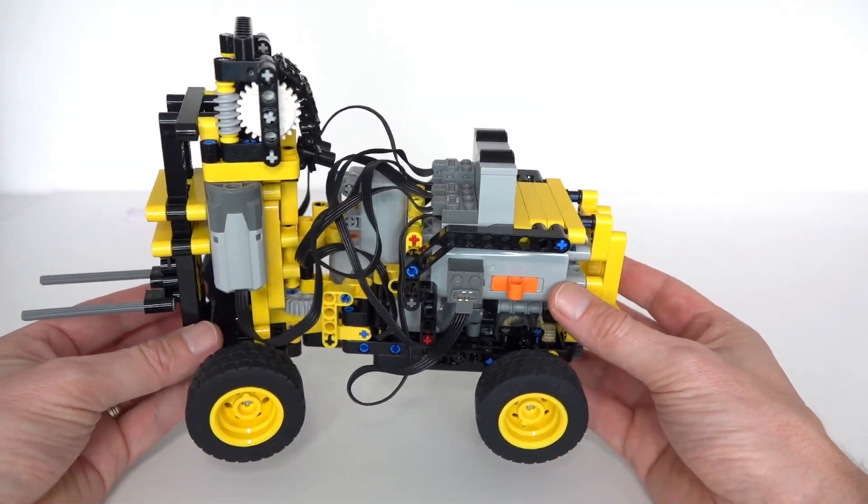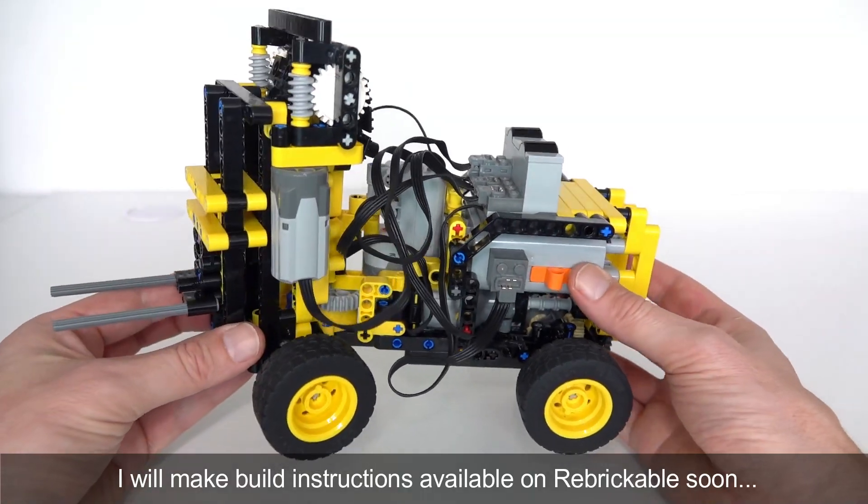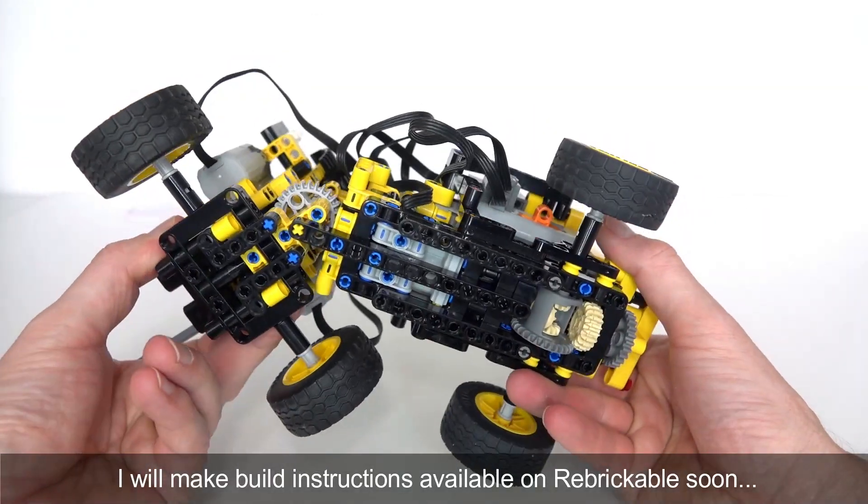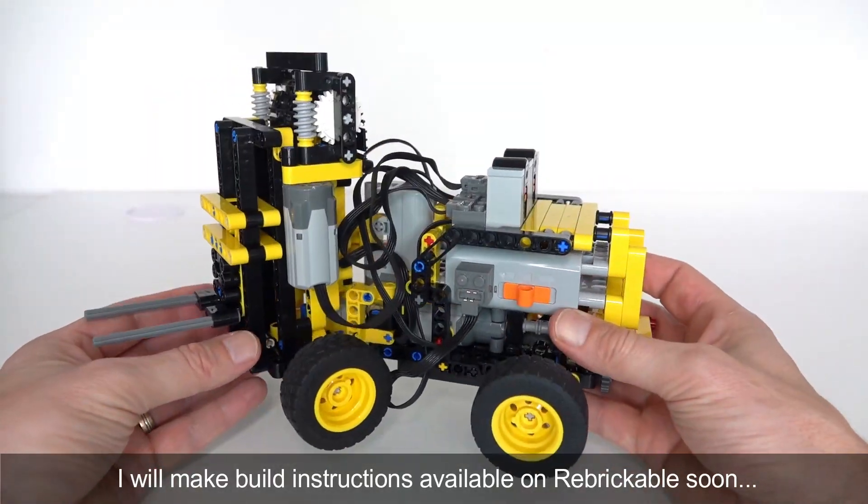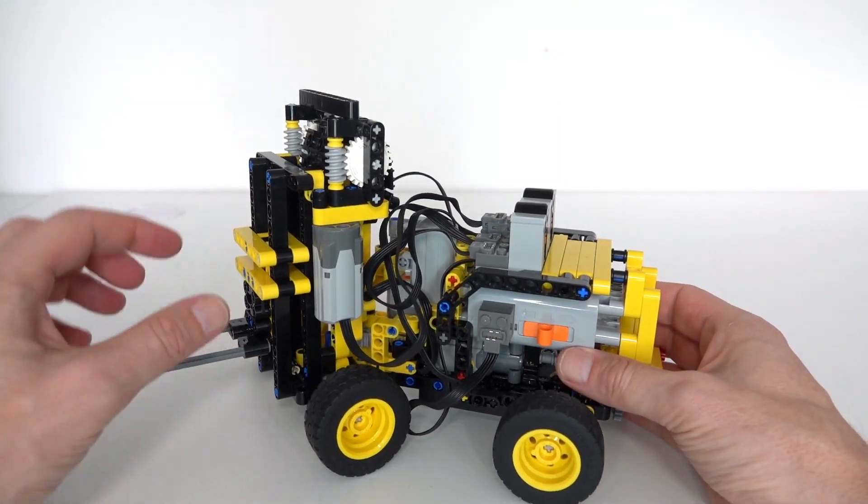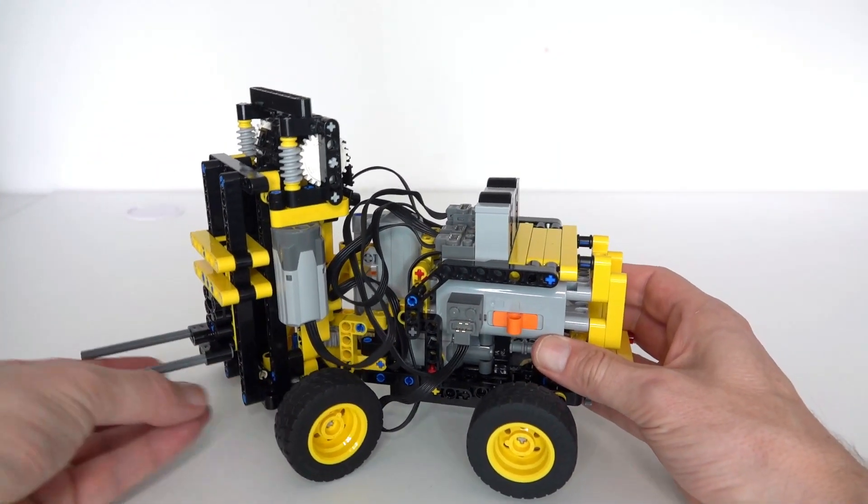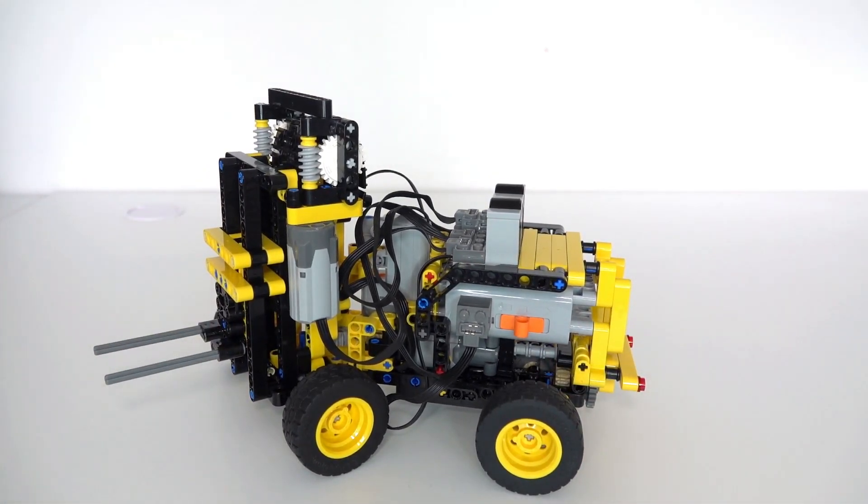So what I've implemented is the ability to drive forwards and backwards, to steer using this articulation mechanism, and you can raise and lower the forks using these two small medium motors. So if you'd like to hear more about this project, please keep watching.